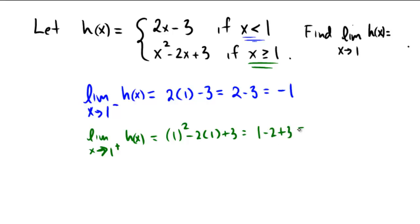Negative 1 plus 3 is positive 2. So this time, from the left, we're getting negative 1. From the right, we're getting positive 2. So overall, we would say that this limit as x approaches 1 does not exist. For a limit to exist, it needs to equal the same thing from both sides.